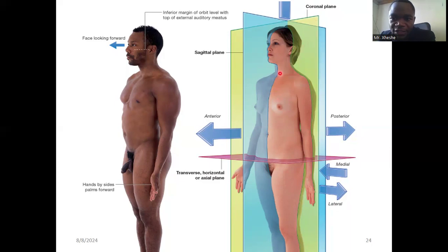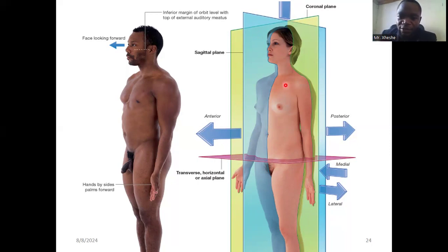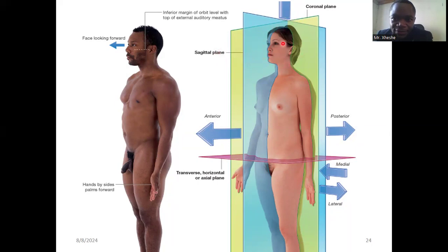Another plane is the coronal plane, which cuts the body into two halves — a part in front called the anterior part and the part at the back called the posterior part. Anterior means in front; posterior means back. Para planes are parallel to the normal plane but don't cut through the center — for example, a parasagittal plane or paracoronal plane.